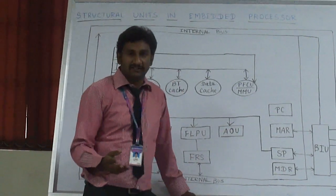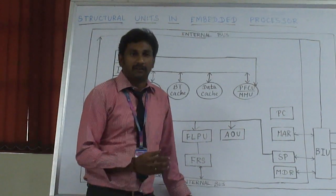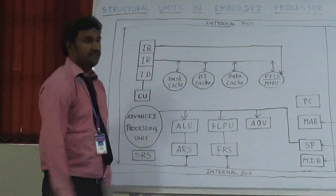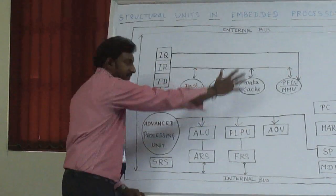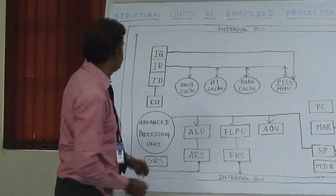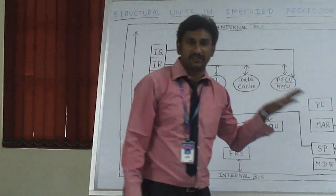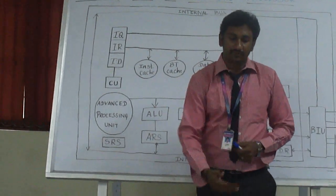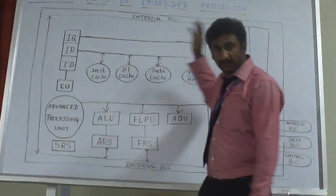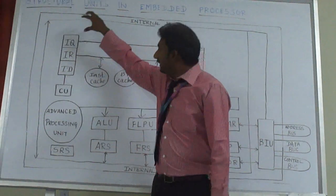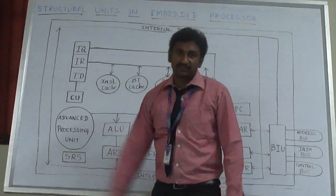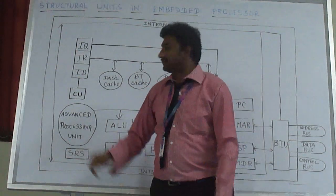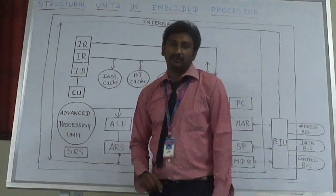What specialties does the Advanced Processing Unit contain? First, IQ — the Instruction Queue. Instructions are waiting in a queue for execution. Before the processor fetches instructions from external memory, the instructions are pre-fetched and ready to execute, waiting in a queue — that is called the Instruction Queue. Another unit is IR — the Instruction Register. The current instruction being executed and processed is held in this block — that is the Instruction Register. Next is ID — the Instruction Decoder. The instruction present in the IR is decoded and sent to the execution unit. And CU — the Control Unit — this unit controls the whole bus activity.